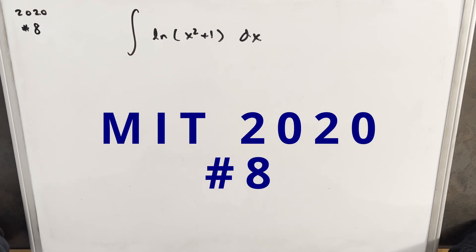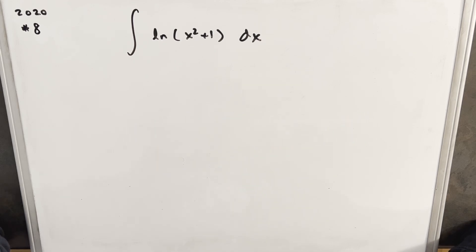Okay, I've been working through the MIT 2020 integration bee, we're up to problem number eight. We have the integral of natural log x squared plus one dx.